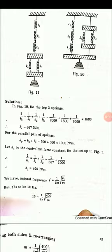We have the natural frequency formula: f is equal to 1 divided by 2 pi, square root of k1 divided by m. Substituting f equal to 10 hertz: 10 is equal to 1 divided by 2 pi, root of 400 divided by m.